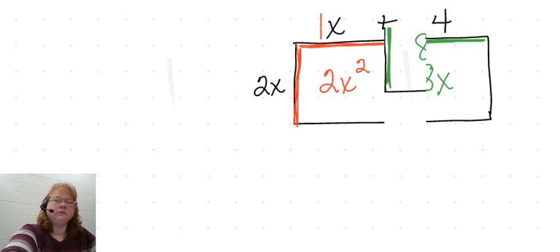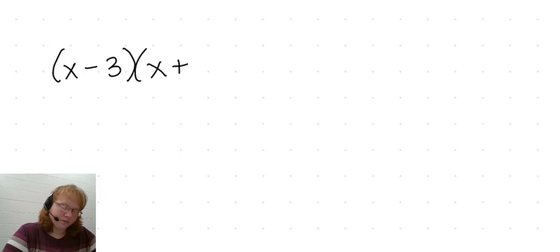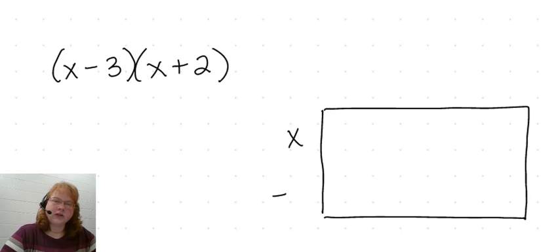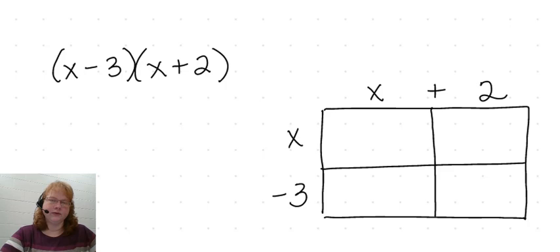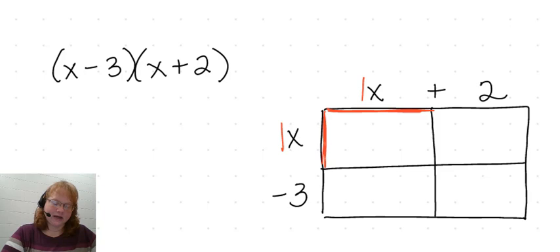Now one more example — what happens if there is a negative involved? Let's take a look at x minus 3 multiplied by x plus 2. We're going to start with our rectangle. The first expression, x minus 3, represents this side — it has two terms, so we partition it into two parts. Then we have x plus 2, which also has two terms, so we'll partition it into two parts. For this example we still have four smaller rectangles. In the first rectangle, we have 1x times 1x. 1 times 1 is 1, and x times x is x squared, so I'll put 1x squared.